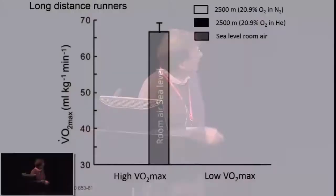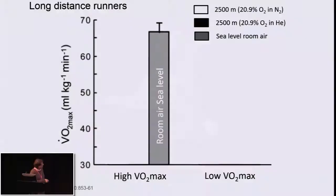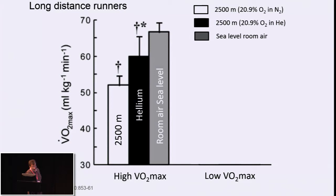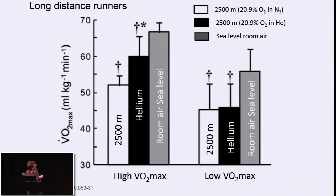Takeshi Ogawa tested high-level long-distance runners with VO2max around 65 mL/kg at sea level, then at simulated altitude of 2,500 meters. VO2max was reduced by about 20% due to hypoxia. When breathing helium-oxygen at altitude, the better runners improved VO2max substantially, but those with a lower VO2max did not benefit from breathing helium. In summary, ventilation may limit VO2max especially at altitude, and increasing ventilation at altitude could increase VO2max.